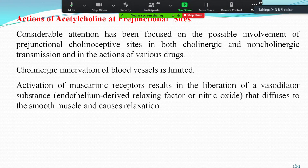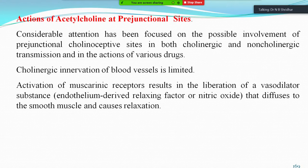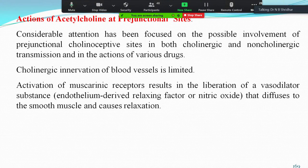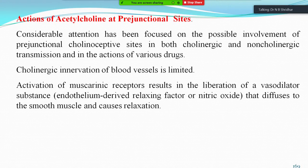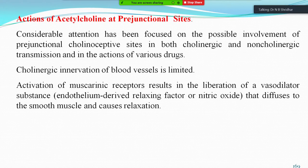Considerable attention has been focused on possible involvement of pre-junctional cholinoceptive sites in both cholinergic and non-cholinergic transmission. Cholinergic innervation of blood vessels is limited especially to the heart. Activation of the muscarinic receptor results in liberation of vasodilator substances — also known as EDRF (endothelial-derived relaxing factor), now well-characterized as nitric oxide. This released nitric oxide diffuses to smooth muscle and causes relaxation.